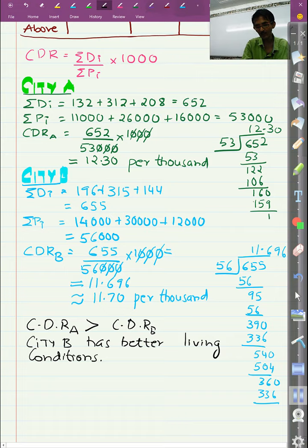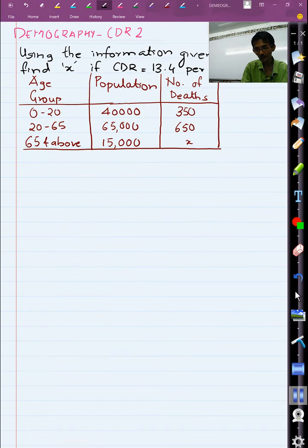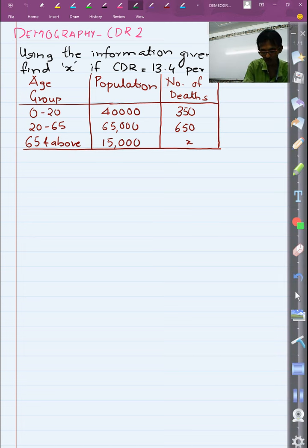Let's see one more problem on CDR. In this problem we are given some information. There is an unknown X and also we are given that CDR is 13.4 per 1000. As per different age group we are given population and number of deaths. So over here the total number of deaths, summation DI is 350 plus 650 plus X that is 1000 plus X.